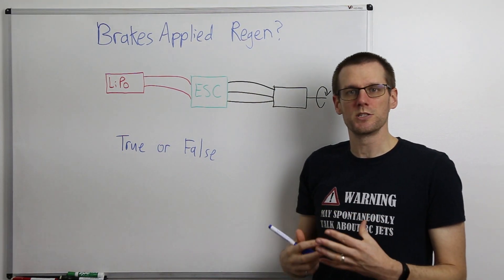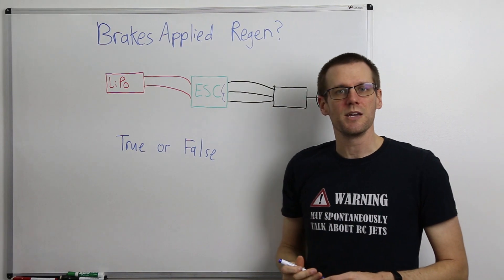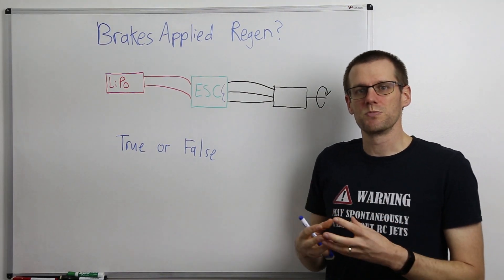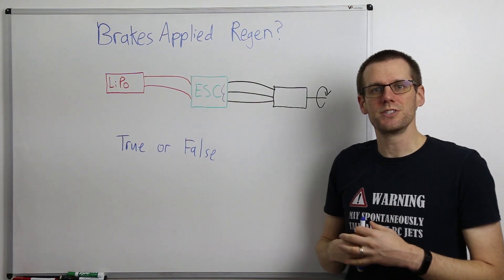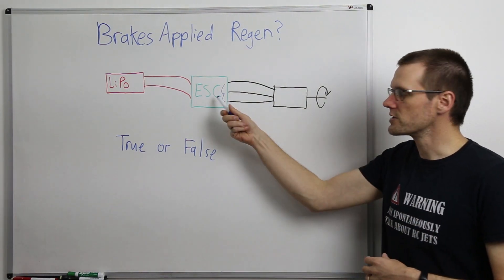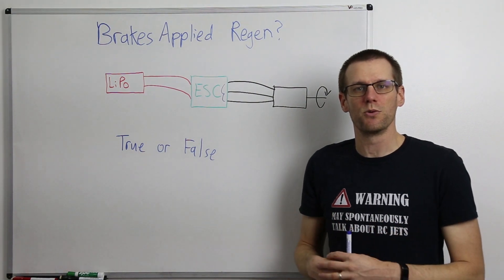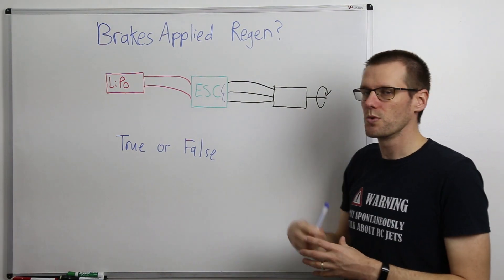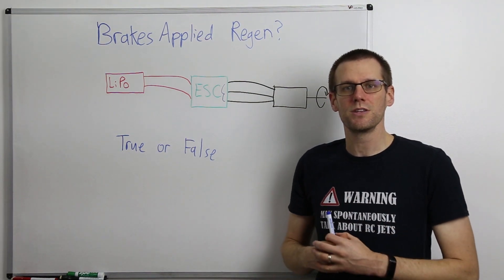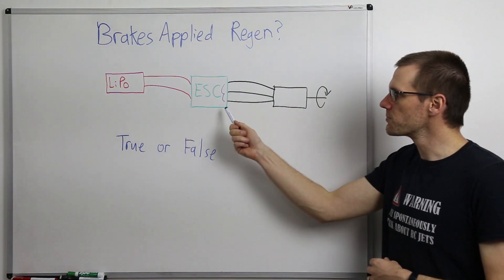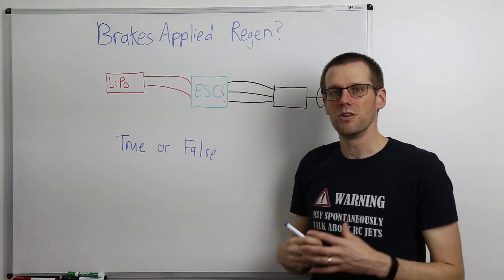Without getting into significant detail, we need to understand what's happening in the system as we apply the brakes. The electronic speed control is responsible for applying brakes. What it does is it essentially takes these leads and shorts them. It shorts them all so that it's able to help stop the motor. If you take a brushless motor and short out at least two leads and try to rotate the shaft, you're going to see that it becomes more difficult. That is essentially what the speed control is doing.